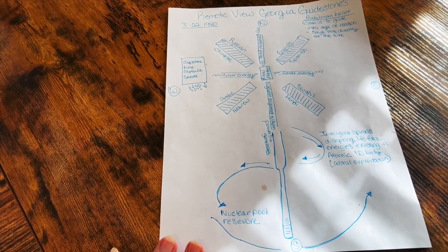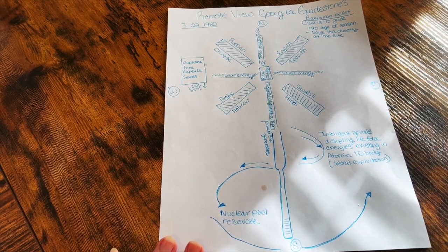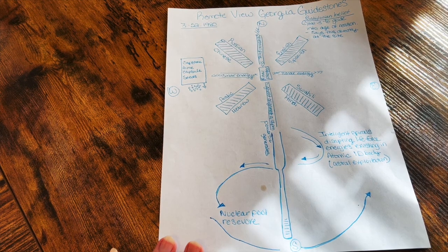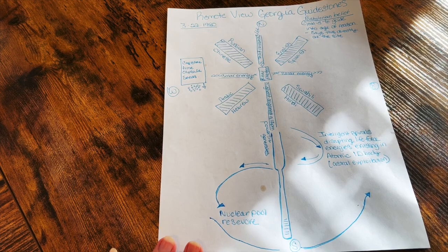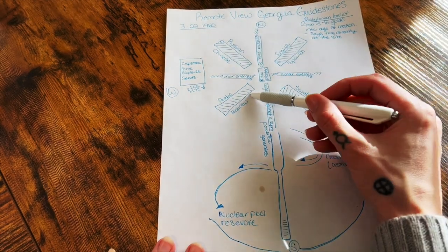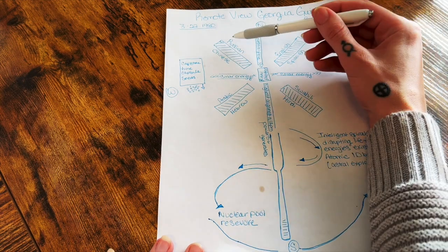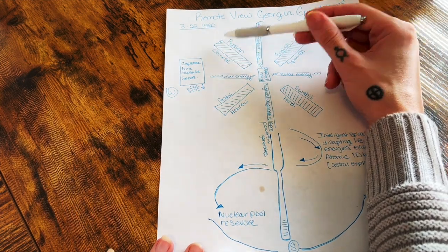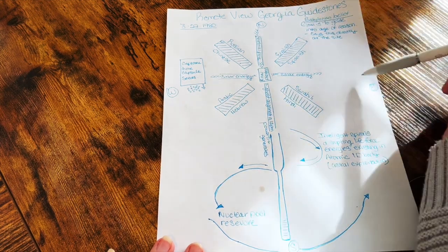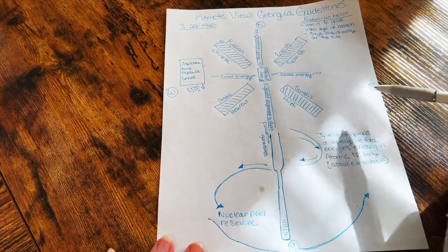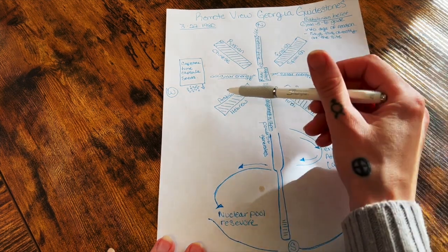This is how the ancients used to do magic. It's a very occult technique that they're using here at the Georgia Guidestones. The languages that they paired in the directions are also important as well: Russia and Chinese going northwest, English and Spanish going northeast, Swahili and Hindi going southeast, and Arabic and Hebrew going southwest.